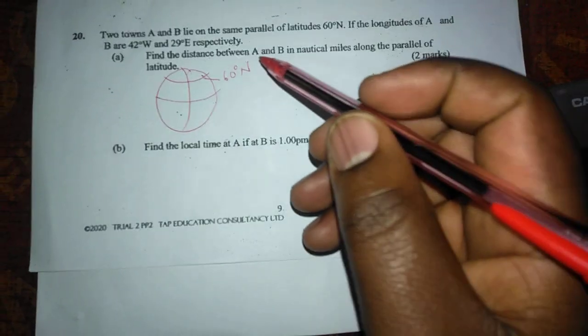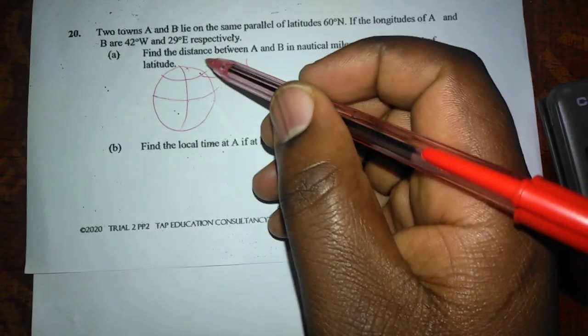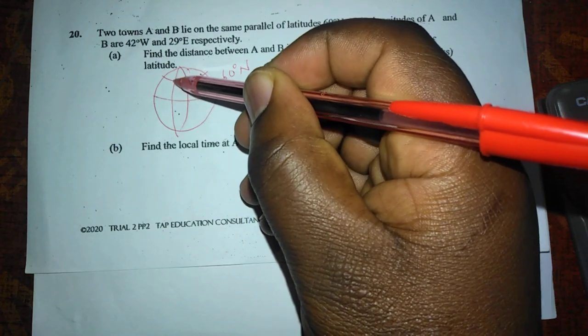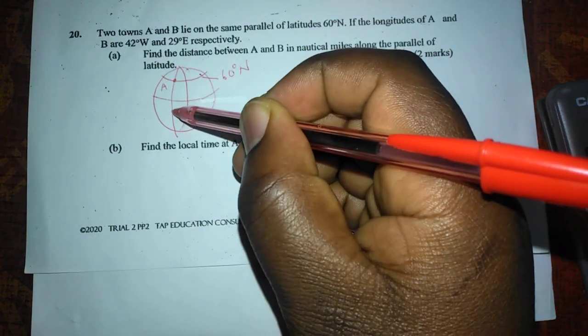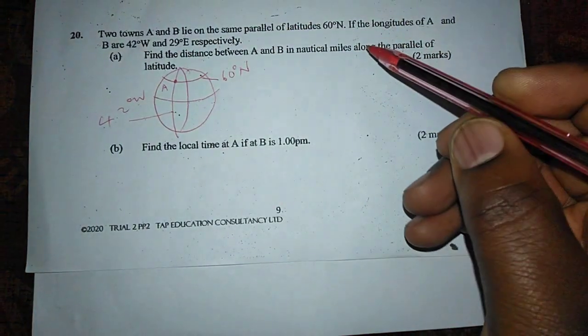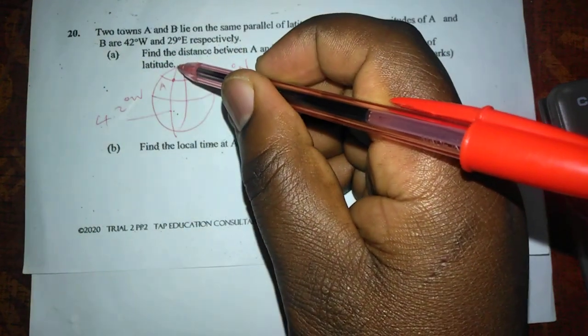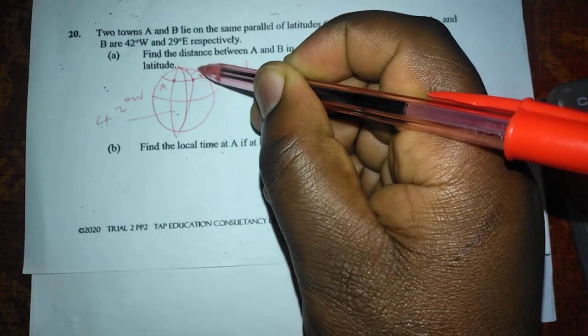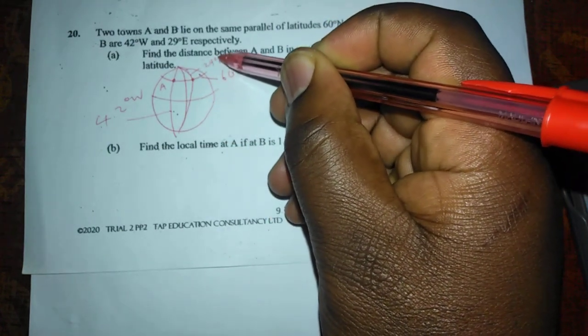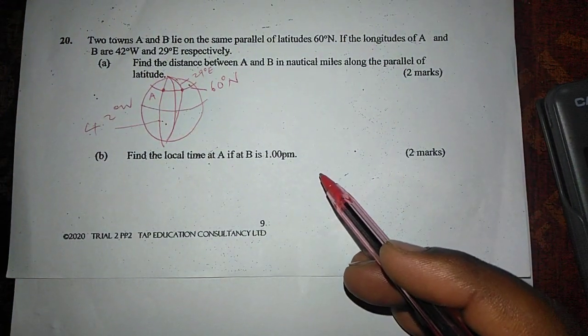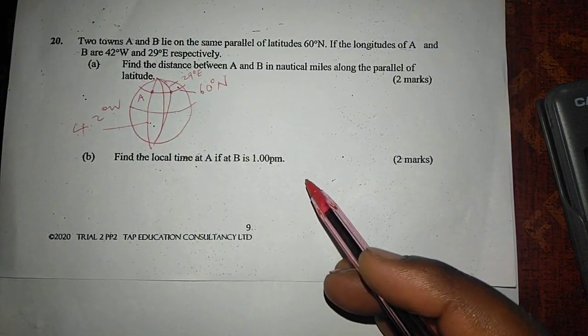But the longitudes, for A, it is 42 degrees west. So A is here. This is 42 in the west. And B is 29. This is 29 in the east. Therefore, these two places lie on the same latitude but different longitudes.